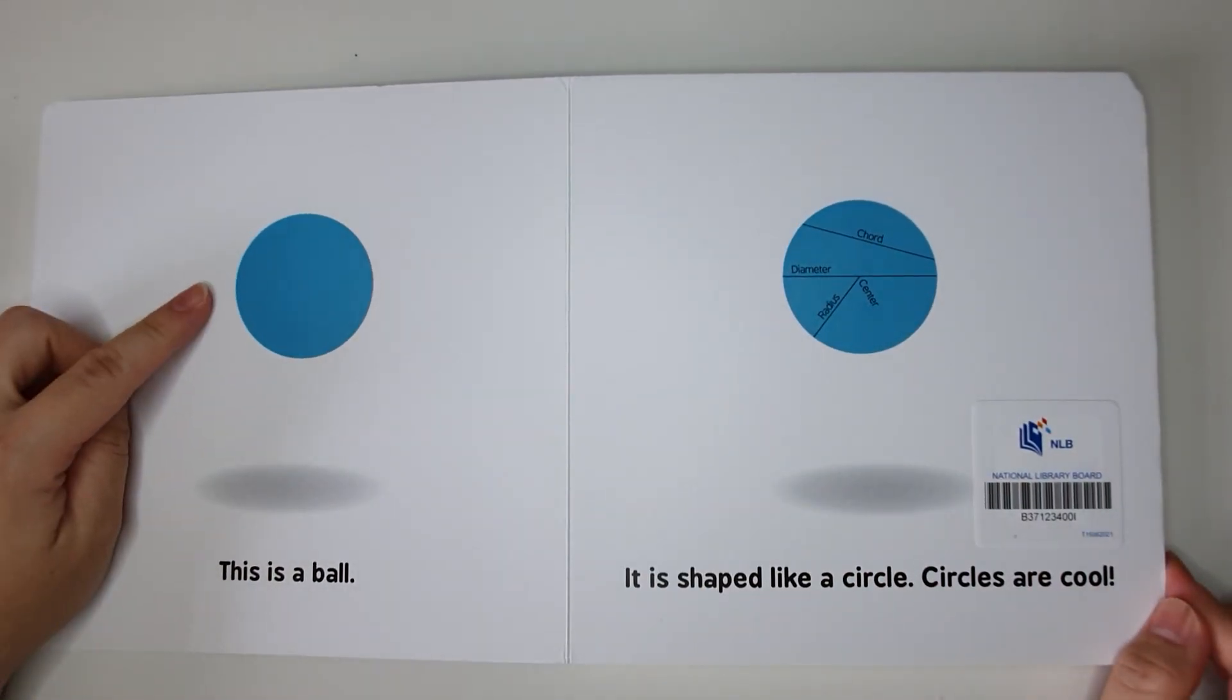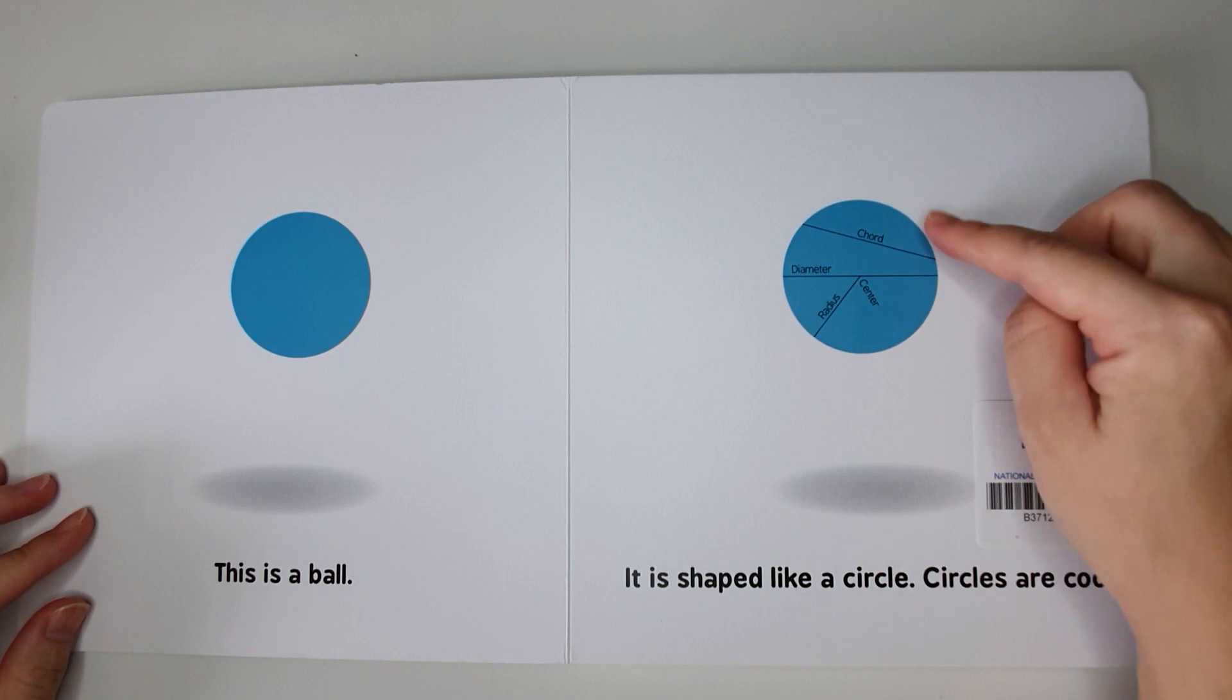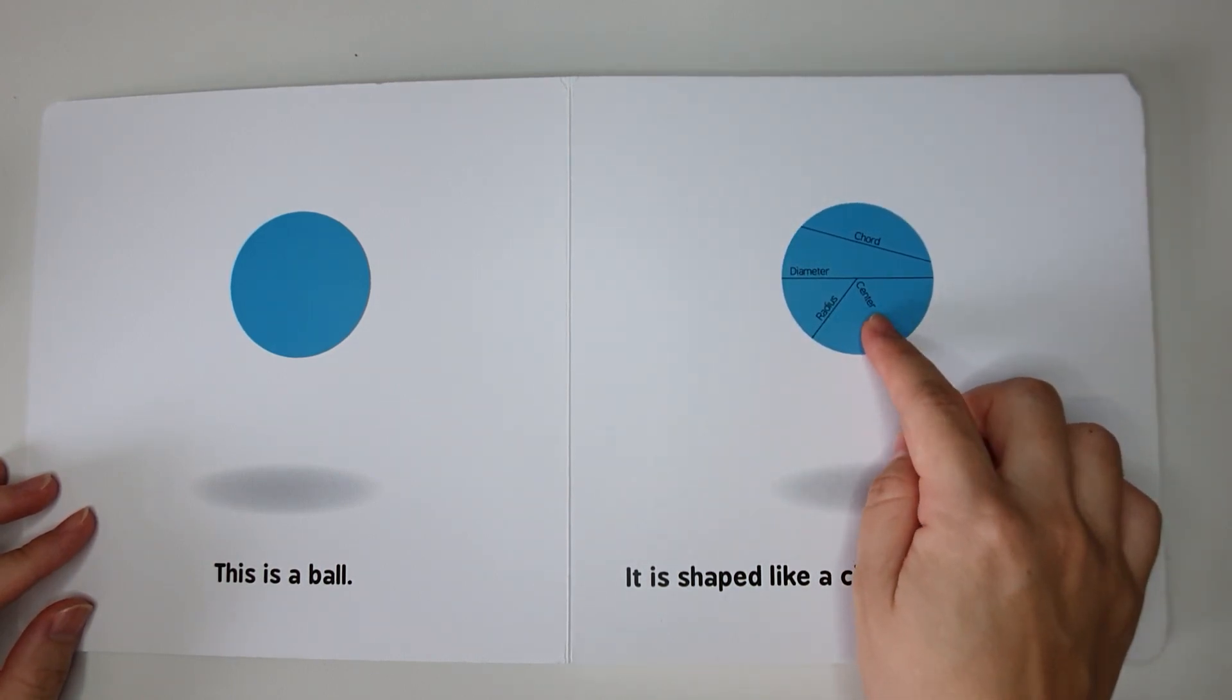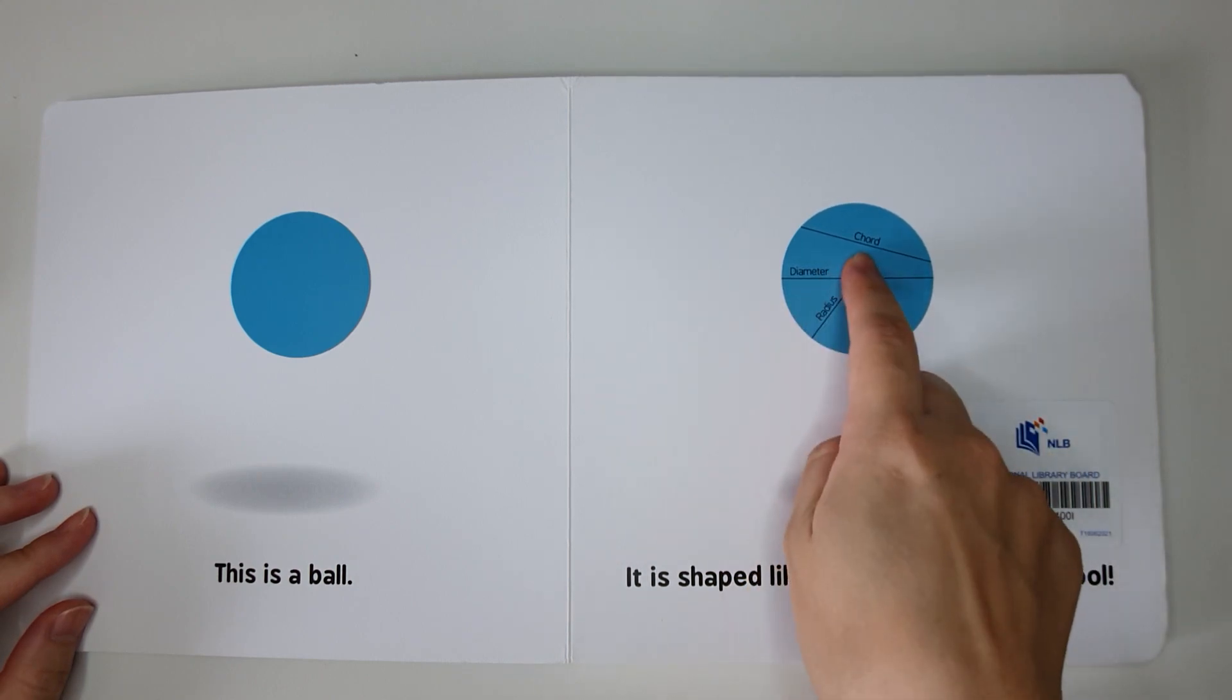This is a ball. It is shaped like a circle. Circles are cool. In a circle, we have the center, the radius, the diameter, and the chord.